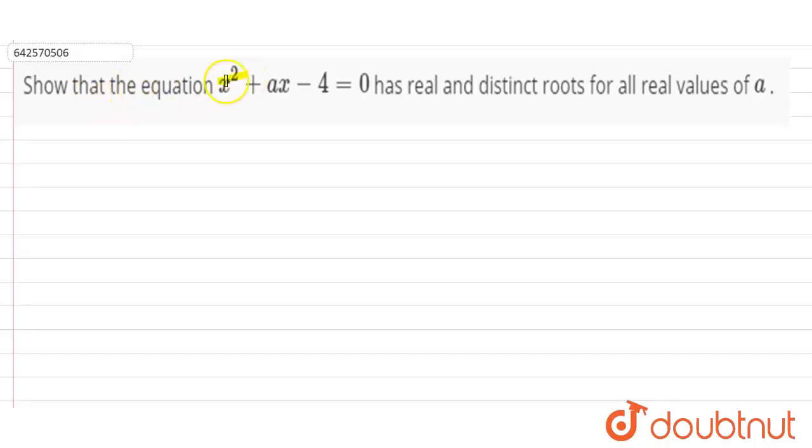So the question is show that the equation x squared plus ax minus 4 equals 0 has real and distinct roots for all real values of a.